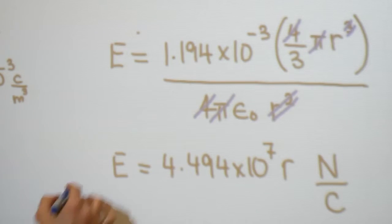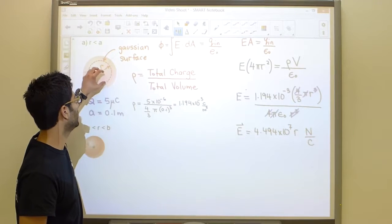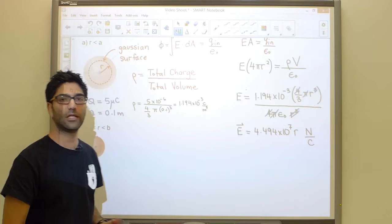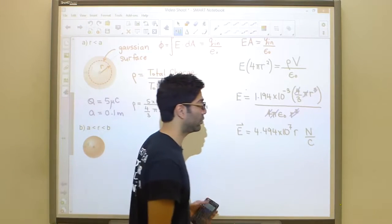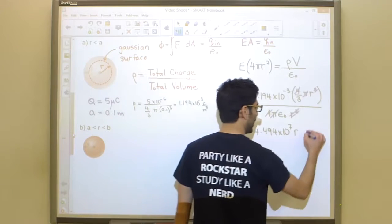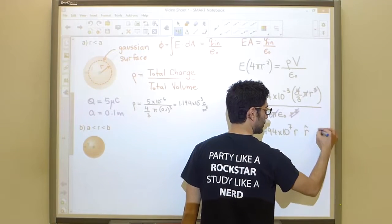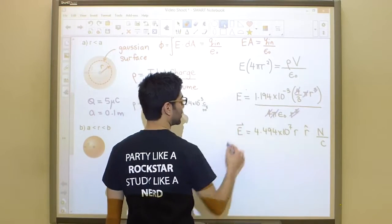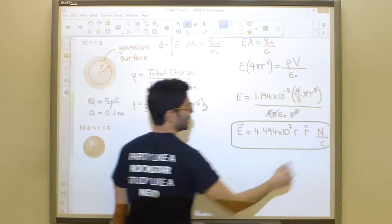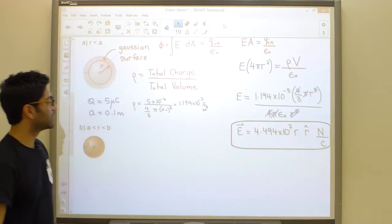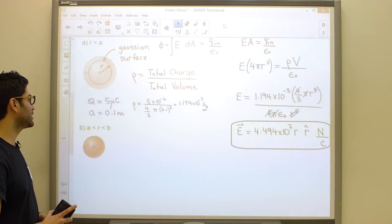The electric field is a vector, so we must specify its direction. Since the sphere is positively charged, the field points radially outward — in the r-hat direction. That is the answer to the first part of this problem.